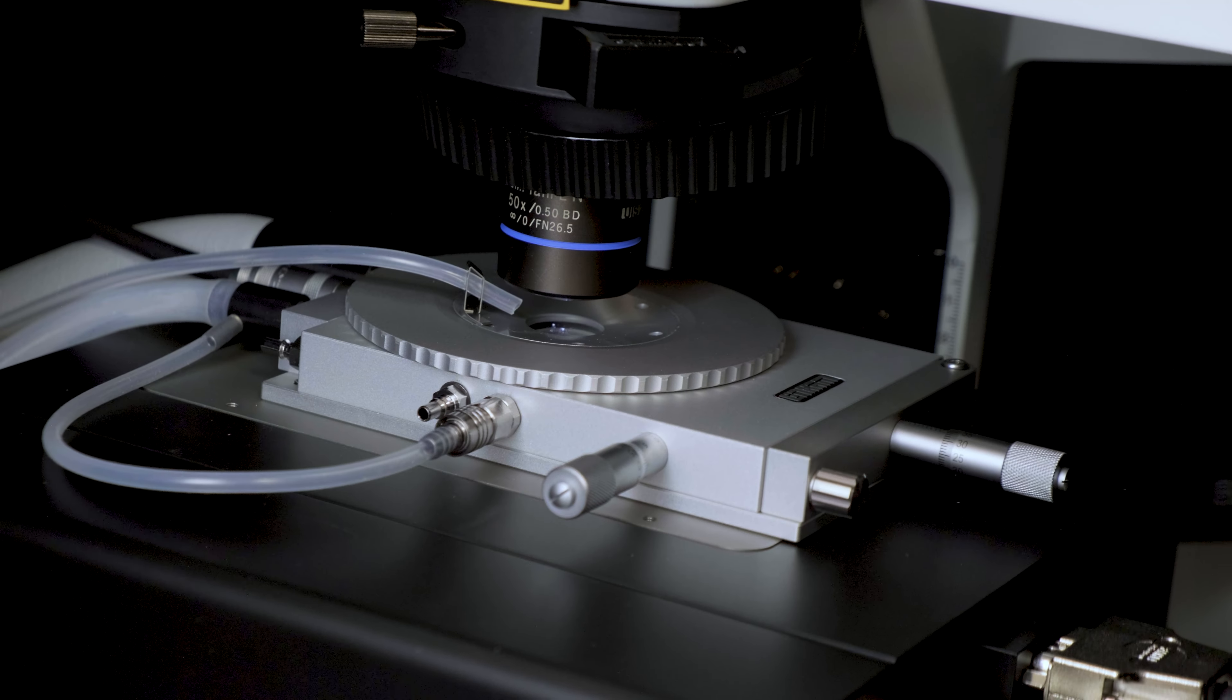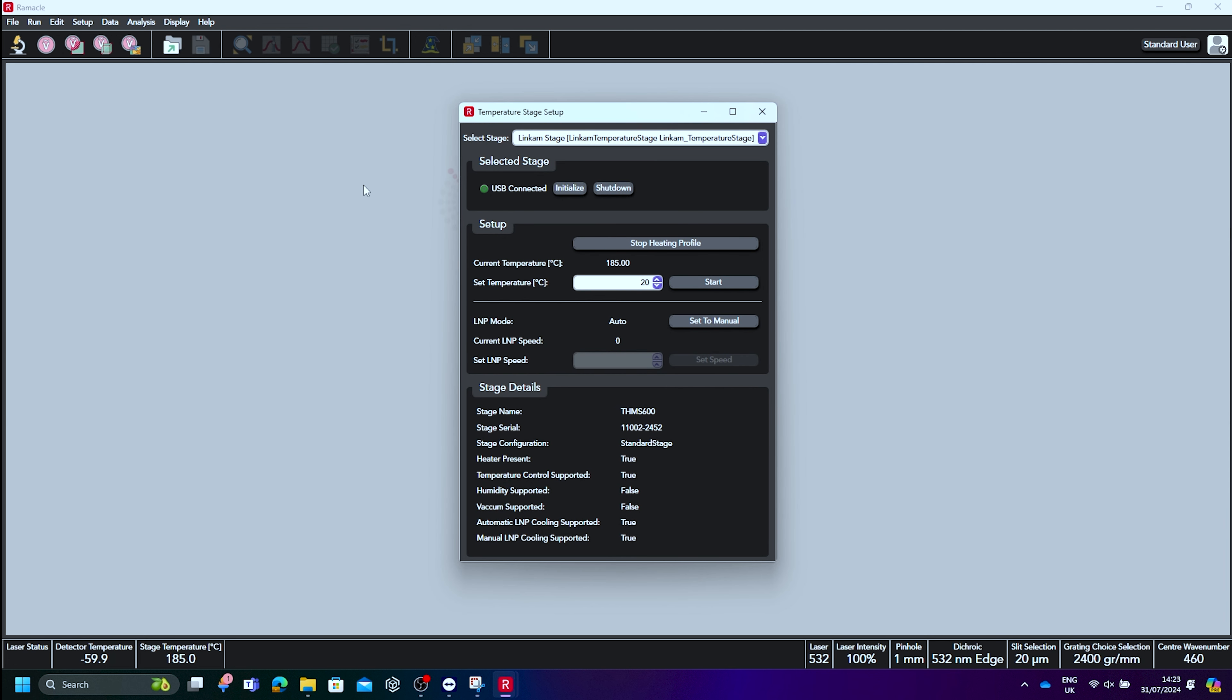With the sample in focus, we can begin setting up a variable temperature measurement. The sample can also be set to a fixed temperature and different types of studies can be performed, such as mapping. Here we will set a start temperature of 200 degrees Celsius.